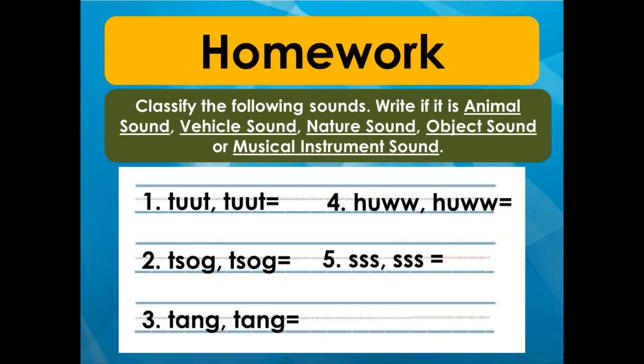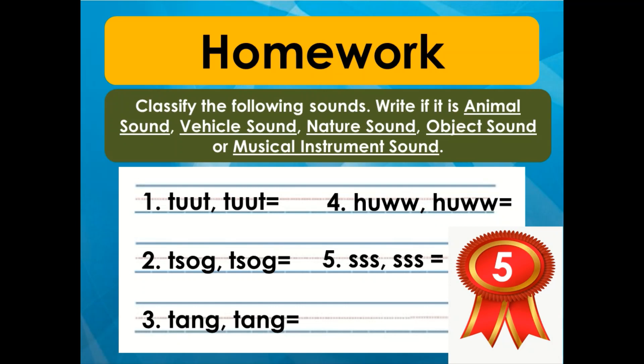Number one — toot toot. Number two — chugsh chugsh. Number three — tang tang. Number four — shh. Number five — sss. For a total of five points. Enjoy your assignment, kids, and I hope you understood our lesson about sounds around.